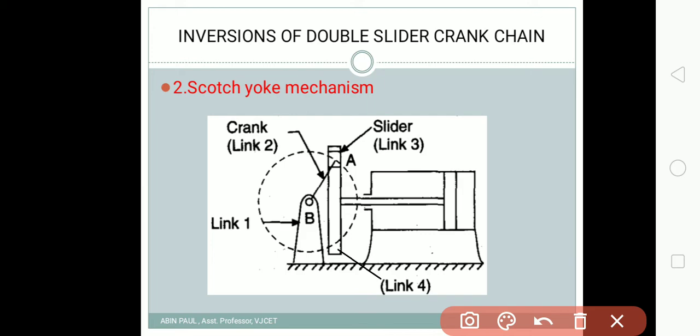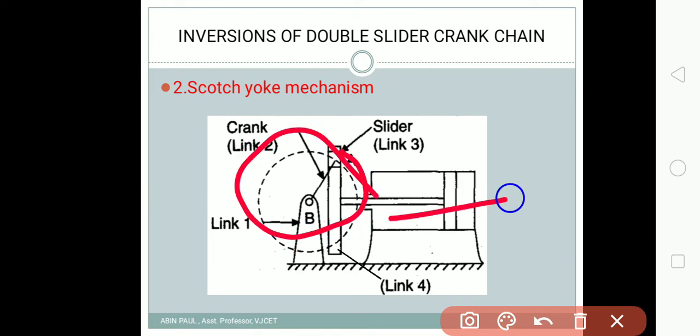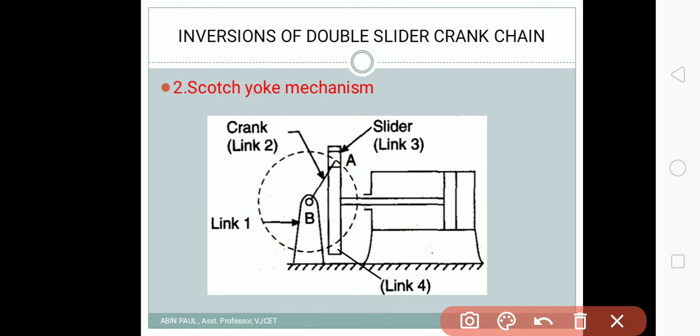The purpose of the Scotch yoke mechanism is to convert rotary motion to reciprocating motion or vice versa.